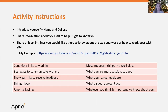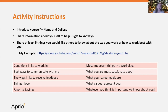For the activity instructions: first, you need to introduce yourself with your name and your college. Share information about yourself to help us get to know you. We want to know about what it would be like to work with you professionally, but we also want to get to know who you are and want you to share the things beyond professional things that you want your coworkers and the people that you work with to know about you. We would also like you to share at least five things that you would like others to know about the way that you work or how others work best with you.